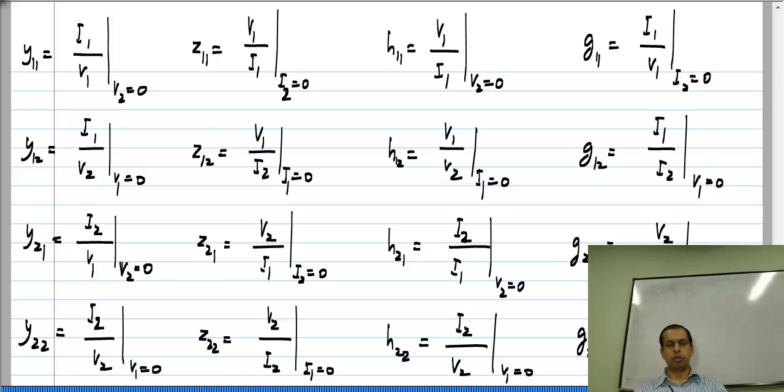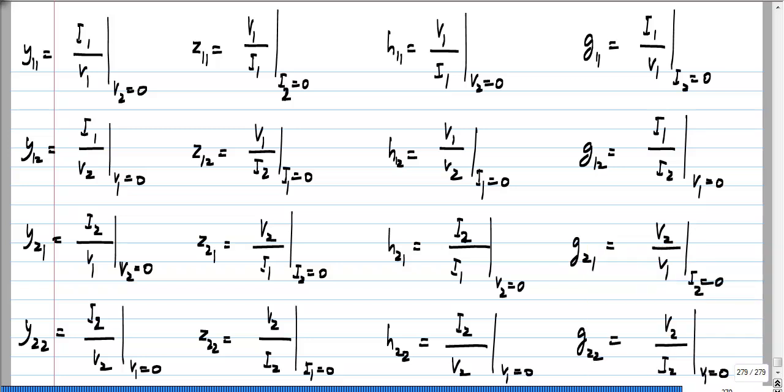In this table, I have listed all of the parameter definitions the way we measure them. We either open circuit or short circuit some port and take the ratio of voltage to current, current to voltage, or ratio of voltages or currents as appropriate.